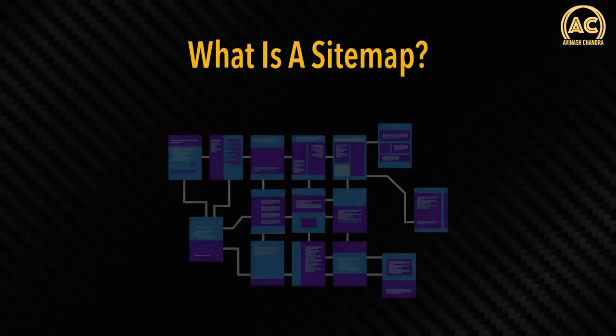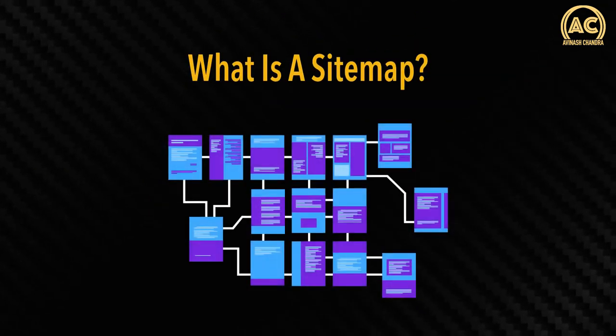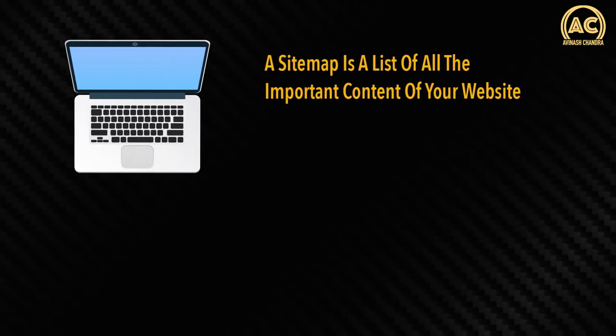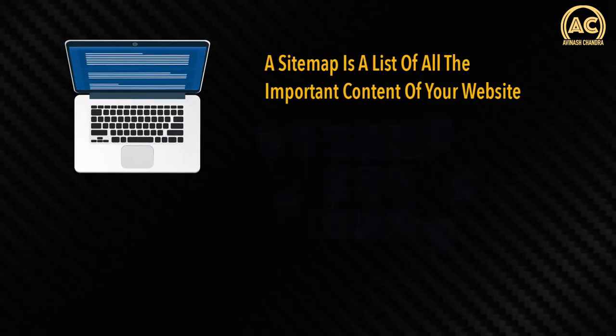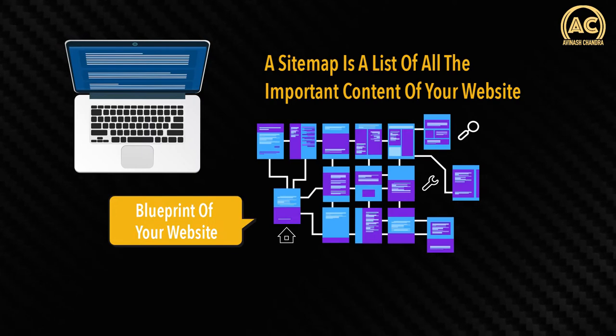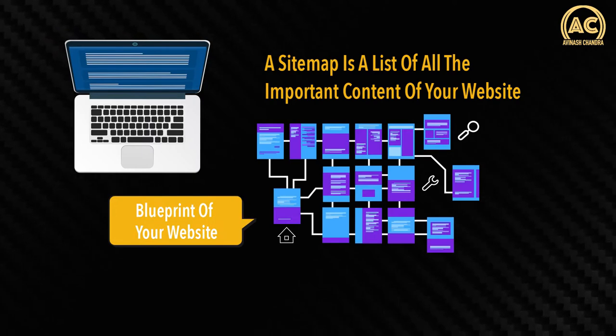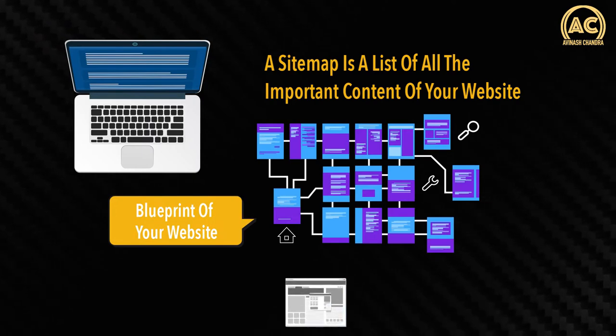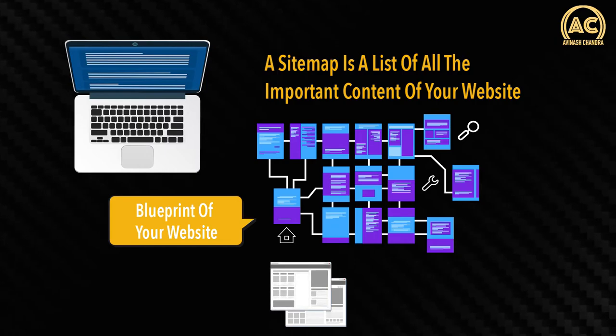So let us understand first, what is a sitemap? A sitemap is a list of all important content on your website. It is a blueprint used to guide search engine crawlers and real humans to the important pages of your website. Search engines like Google use crawlers to crawl websites all over the internet to read, organize, and index web pages and websites.